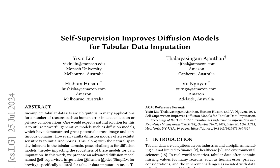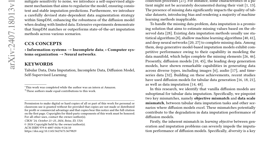SIMP-DM integrates self-supervised learning techniques into tabular diffusion models, introducing a self-supervised alignment mechanism to provide consistent and accurate imputation. The model also uses state-dependent augmentation, a perturbation-based data augmentation strategy that improves the robustness of the diffusion model.